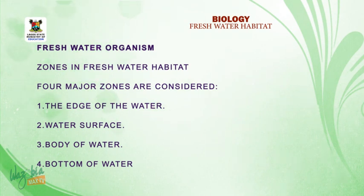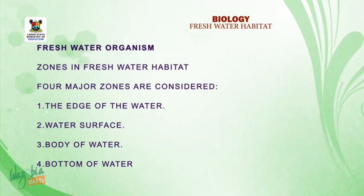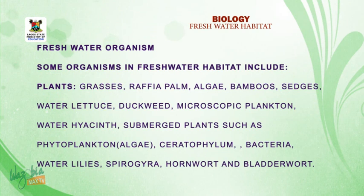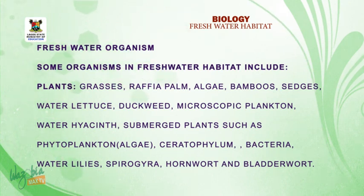The four zones are: 1. The edge of the water. 2. The water surface. 3. The body of water. 4. The bottom of the water. Freshwater habitats include both plants and animals.